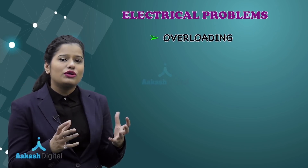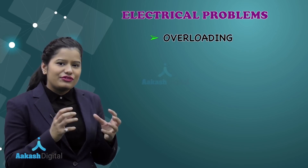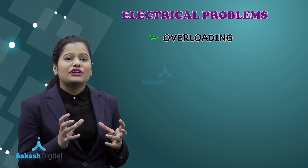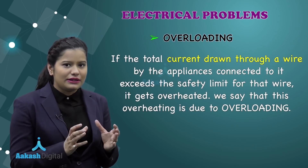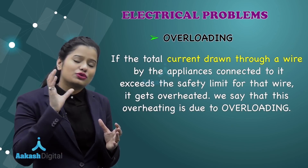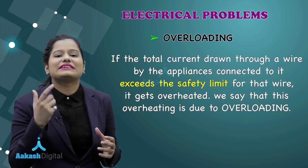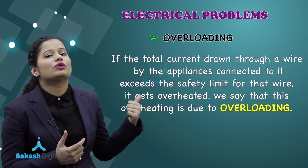In the case of overloading, every wire has a particular safety limit. When the current flowing through that wire exceeds that safety limit, it is called overloading.